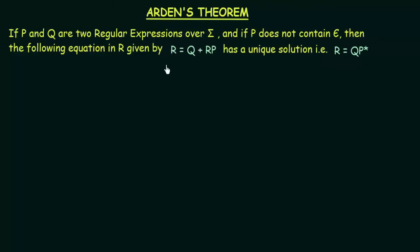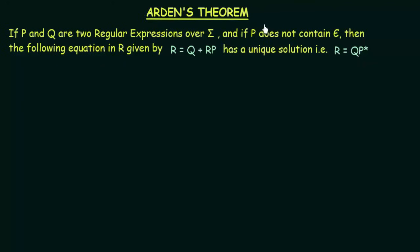Arden's Theorem tells us that if you have two regular expressions p and q over sigma, and if p does not contain epsilon, then the equation r = q + rp has a unique solution given by r = qp*. That means whenever you get an equation of the form r = q + rp, you can directly replace it with r = qp*, because this is a solution as stated by Arden's Theorem.